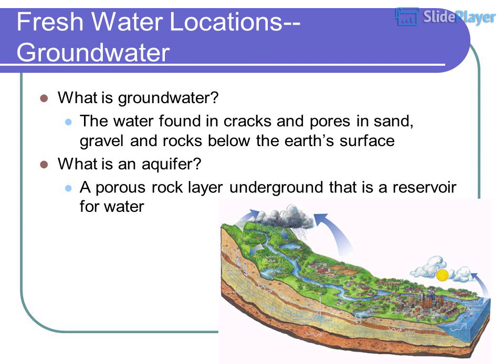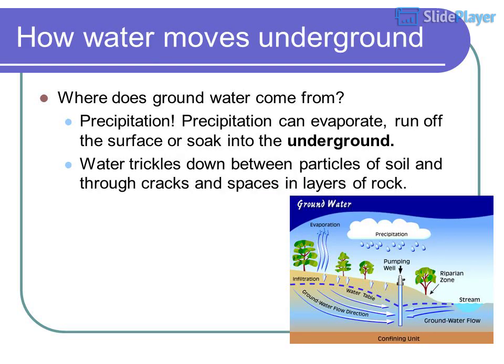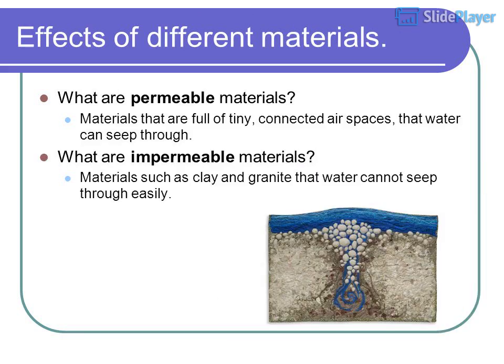What is groundwater? The water found in cracks and pores in sand, gravel, and rocks below the earth's surface. What is an aquifer? A porous rock layer underground that is a reservoir for water. Groundwater comes from precipitation, which can evaporate, run off the surface, or soak into the underground — water trickles down between particles of soil and through cracks and spaces in layers of rock.